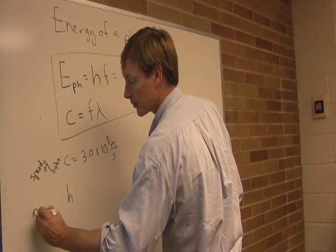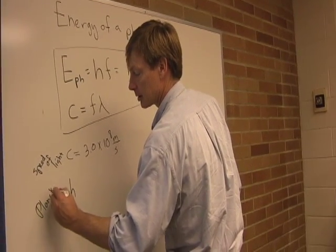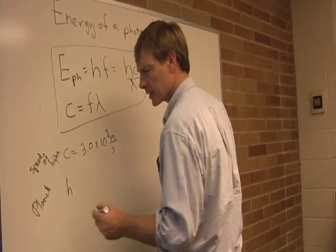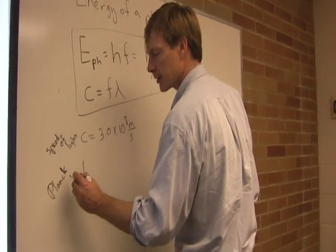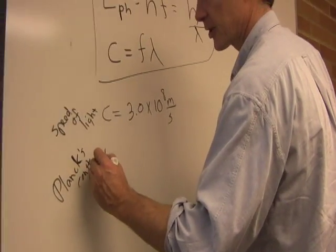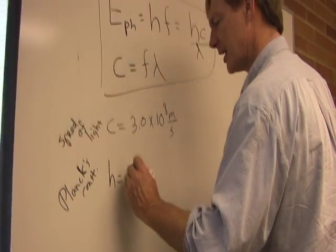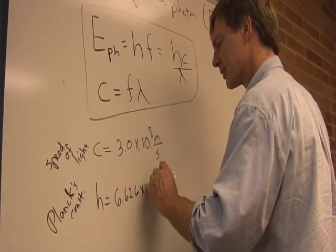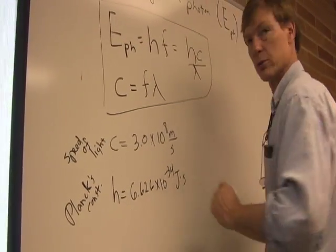h is Planck's constant, after a guy named Planck. 1900, wrote one of the first very important quantum mechanics papers. Planck's constant, and he came up with this constant to explain what was going on. And it's about 6.626 times 10 to the minus 34 joules times seconds.